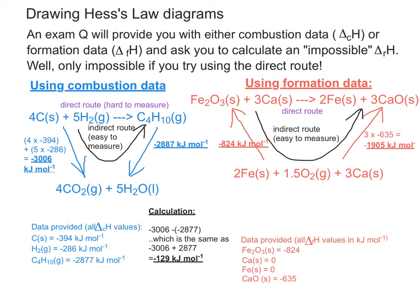So you can see I've now put in minus 824 on the left-hand side and minus 1905 on the right-hand side because I'm ignoring the three calciums because I don't need them because they're zero. I'm ignoring the two irons because they're also zero. What I have to pay attention to, though, is the direction of travel of my black arrow, my indirect route.